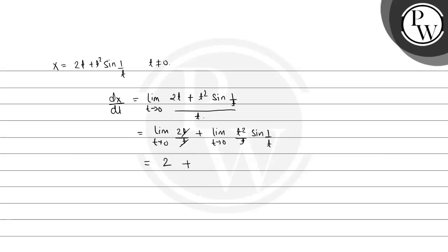In the first term, t/t cancels to give 2. For the second term, limit t→0 of t · sin(1/t): since sin(1/t) is bounded and t→0, this value is 0. So dx/dt = 2 + 0 = 2.